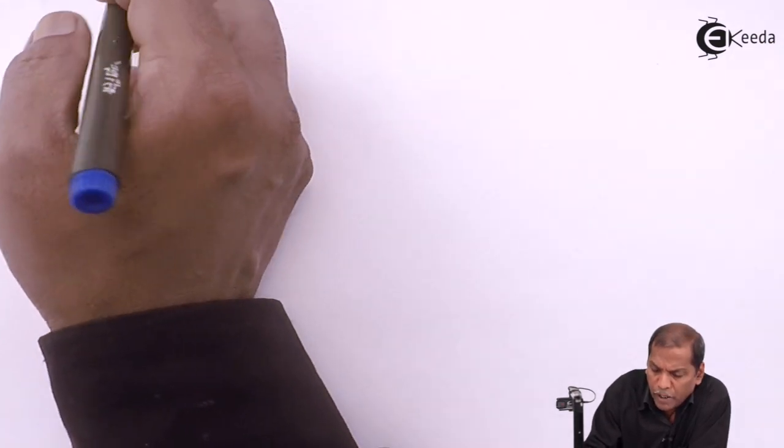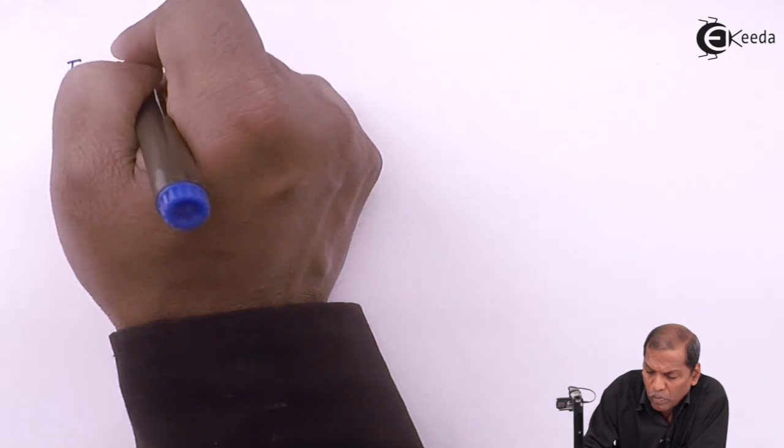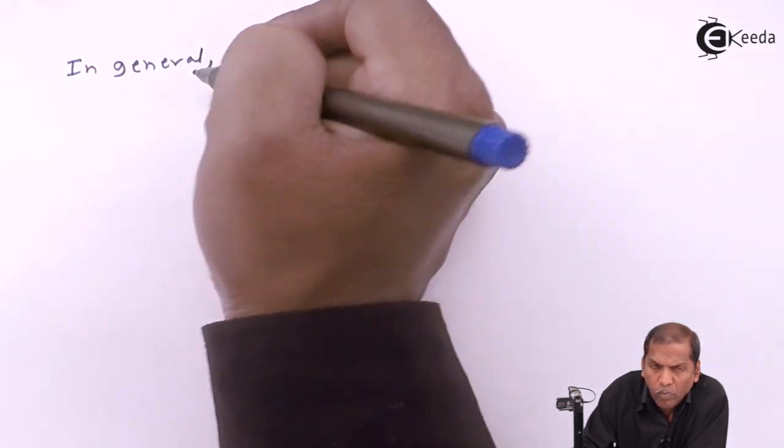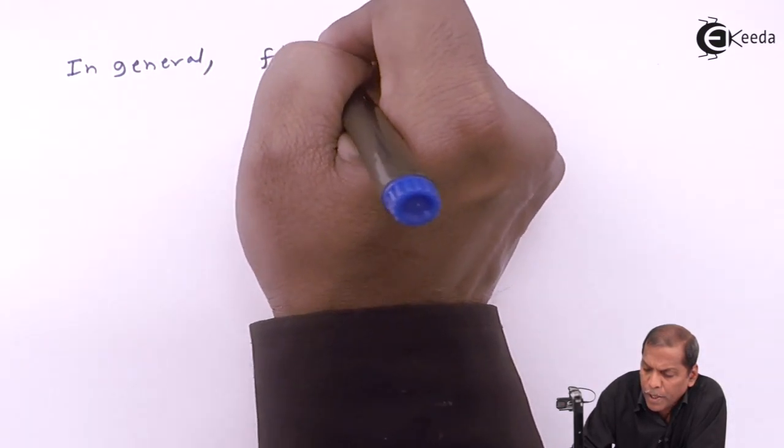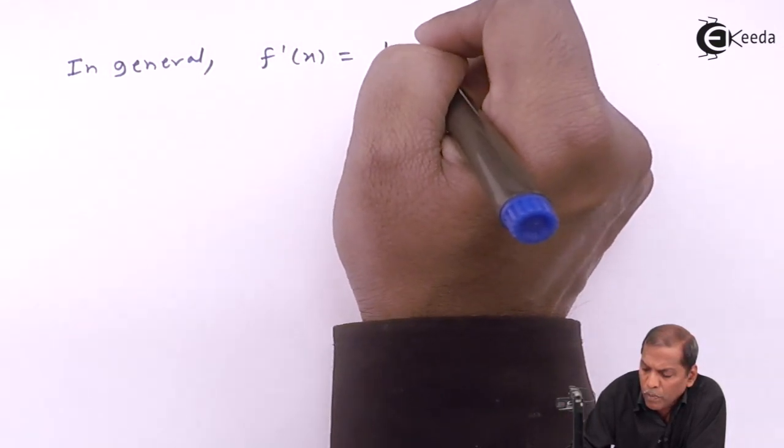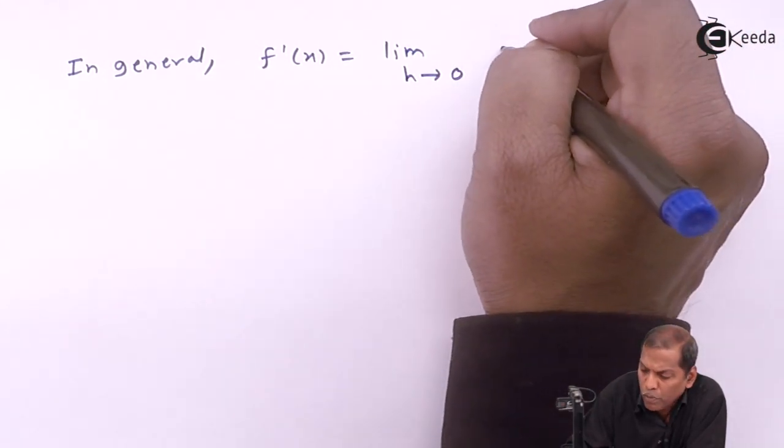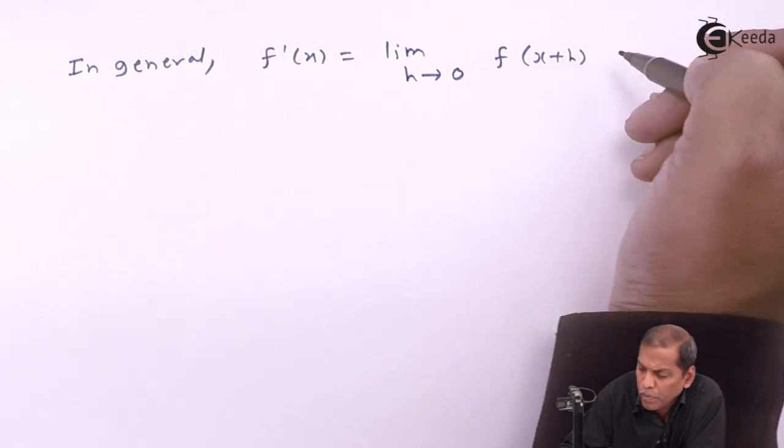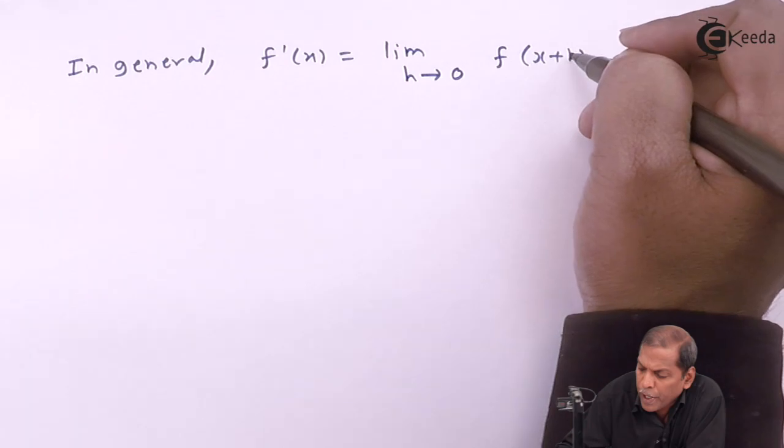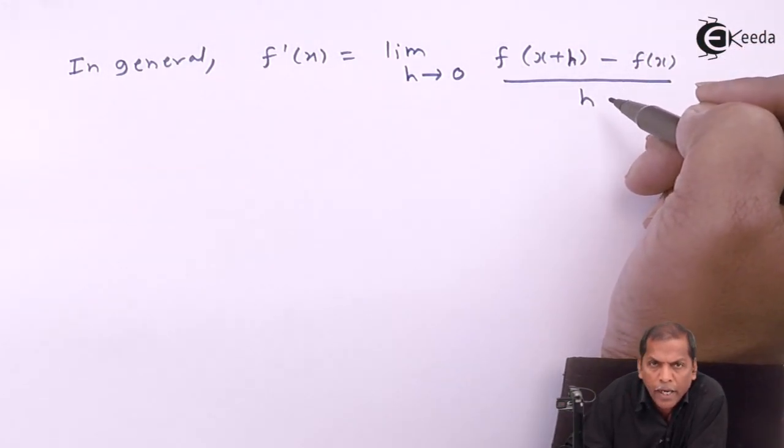In general, we write f'(x) = lim(h→0) [f(x+h) - f(x)]/h